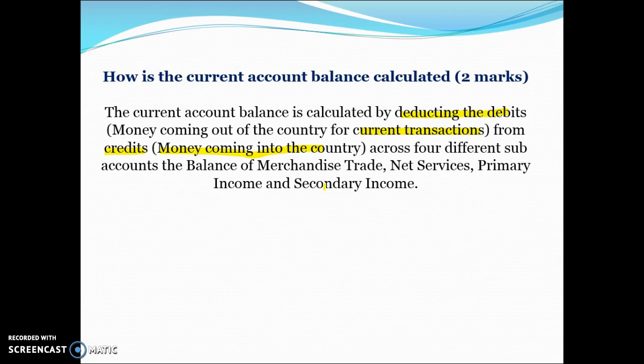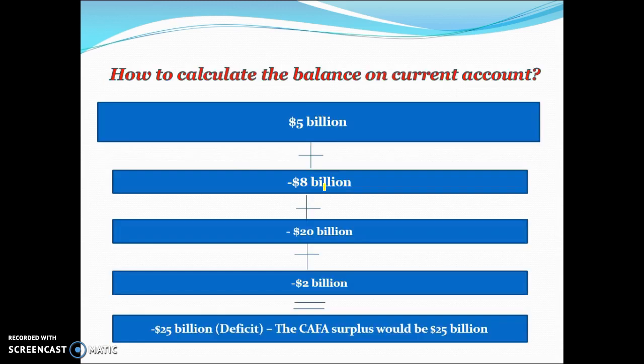We're recording all money coming in as credits minus all money coming out as debits for all current transactions with no future obligation, across those four sub-accounts: BOMT, net services, net primary income and net secondary income. To calculate the current account balance you add up credits minus debits in each sub-account. One sub-account may be in surplus while three accounts are in deficit, giving an overall deficit of $25 billion.